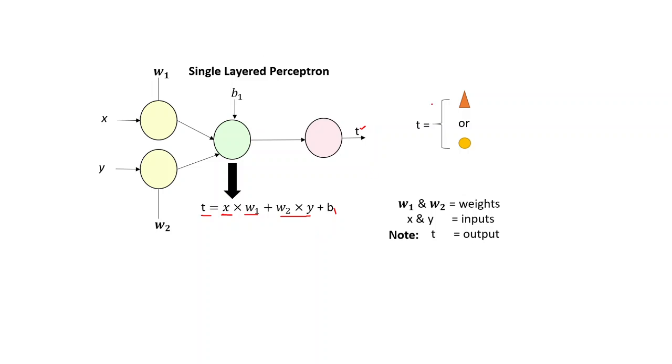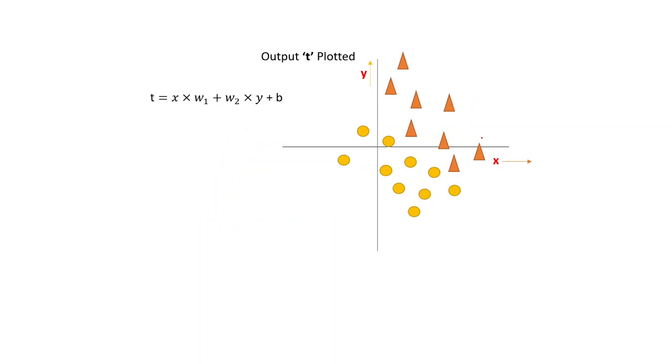Let us assume that there can be only two types of outputs. It can either be a rectangle or a circle.